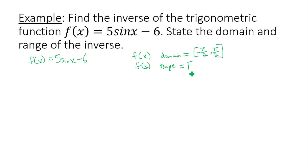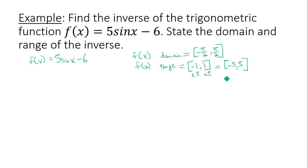For the range: normally sine gives values between -1 and 1, but we have transformations. We multiply by 5, giving -5 to 5, then subtract 6 from each endpoint, giving a range of -11 to -1. So the domain of the original function is [-π/2, π/2] and the range is [-11, -1].